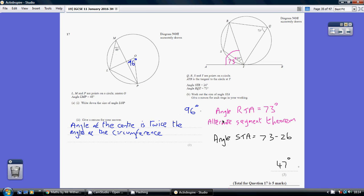For part B, this is quite an unusual circle theorem, the alternate segment theorem, which tells us that this angle between the tangent and RT, this angle here, RTA, is the same as this angle here. So that's the alternate segment theorem, which is why that in total is 73.